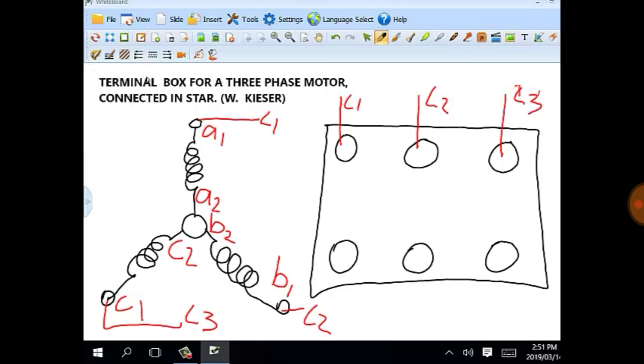We've got our three stator coils which are connected between the studs. Each stator coil needs to be labeled according to our star diagram. First we've got A1, A2, B1, B2, and C1, C2.